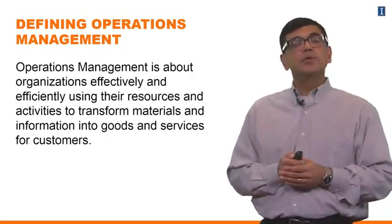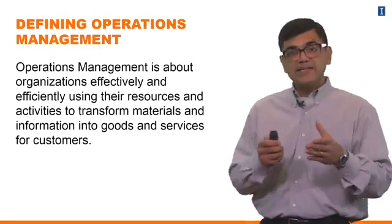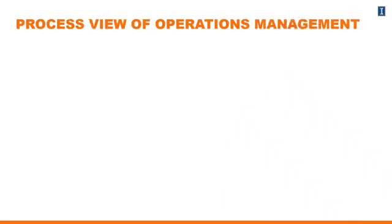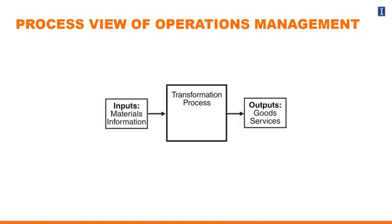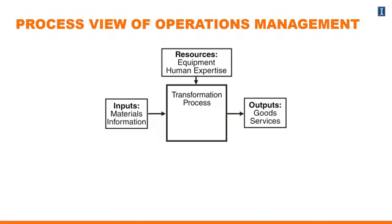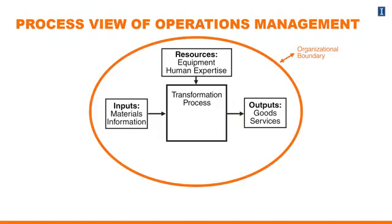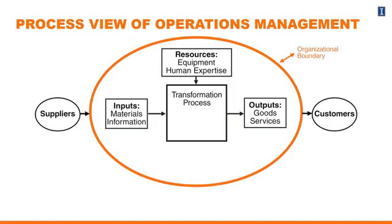Let's take this input-process-output view and get some specifics out of it. Here's the process view of operations management. We start with the transformation process, which is adding value to the product — taking inputs from suppliers and delivering outputs to customers. What you have are the resources: the capital, equipment, and human expertise going in. We can put a circle around this and call it the organizational boundary — this is typically what we think about in terms of an organization making goods or services to be delivered to customers.